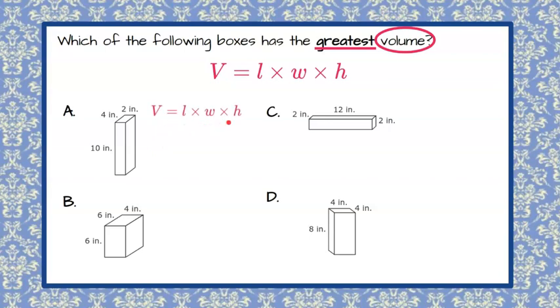Beginning with our formula, answer choice A has length 4, width 2, and height 10. So 4 times 2 times 10: 4 times 2 is 8, times 10 is 80.